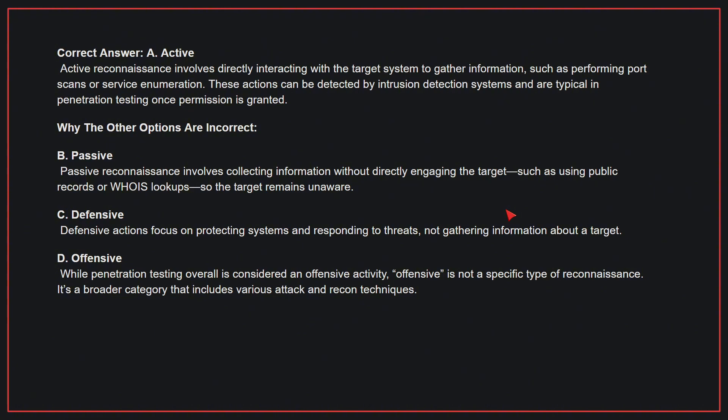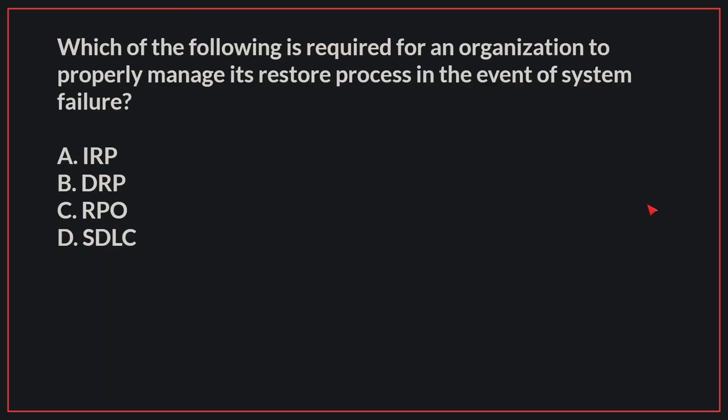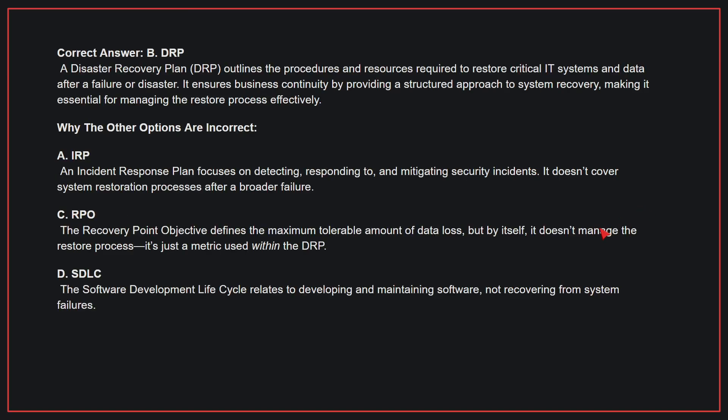Therefore, the correct answer is A. Which of the following is required for an organization to properly manage its restore process in the event of system failure? The correct answer is B: DRP. A DRP outlines the procedures and resources required to restore critical IT systems and data after a failure or disaster. It ensures business continuity by providing a structured approach to system recovery, making it essential for managing the restore process effectively.